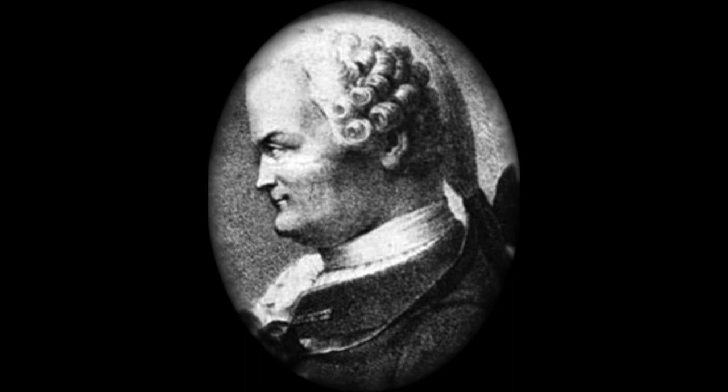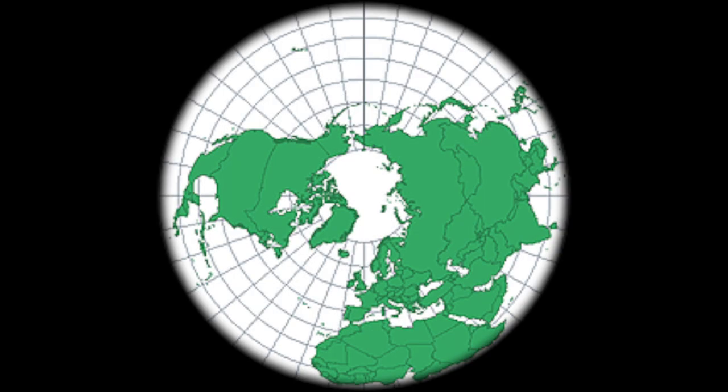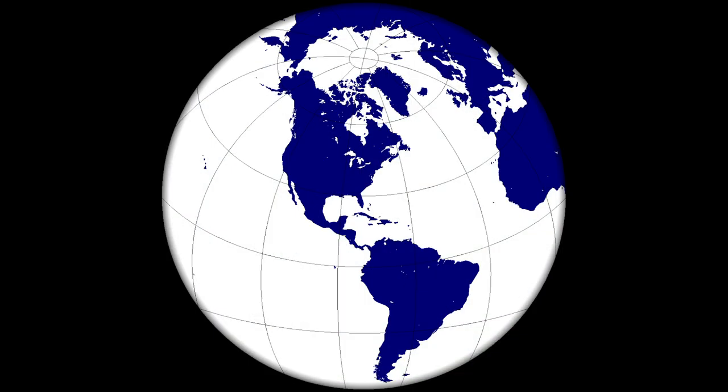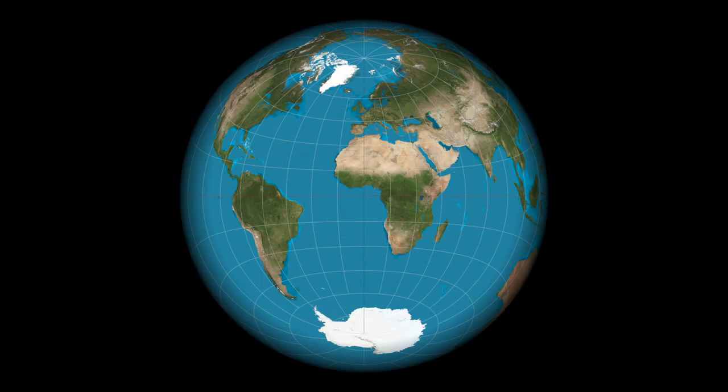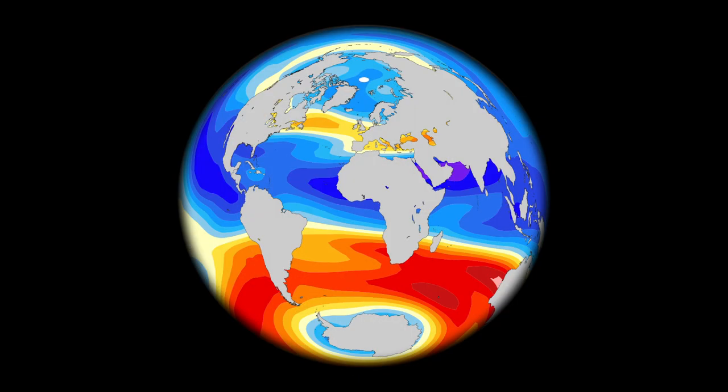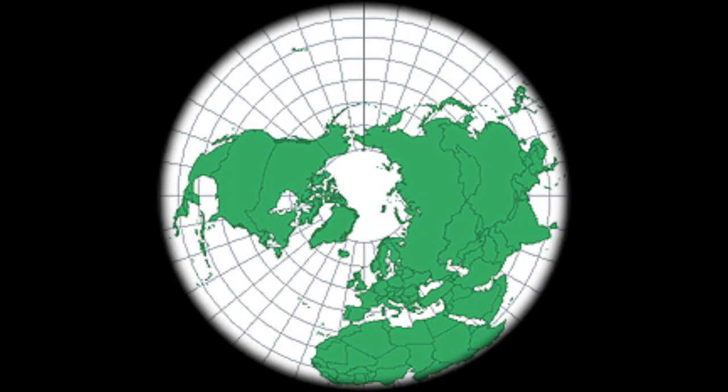There are three versions of Lambert's azimuthal equal area projection: the polar, oblique, and equatorial. These can be further defined by being either spherical — showing the whole earth or object — or hemispherical, meaning showing part of the earth or the object.